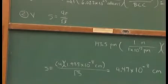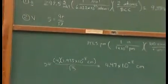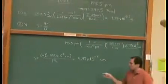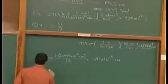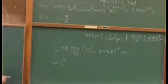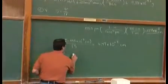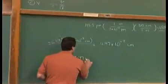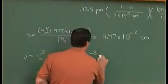This is one side of our unit cell, our cube. Now for the volume, very simply put, the volume is equal to a side cubed. So we'll go ahead and cube this number. We'll cube 4.47 times 10 to the negative 8th centimeters.